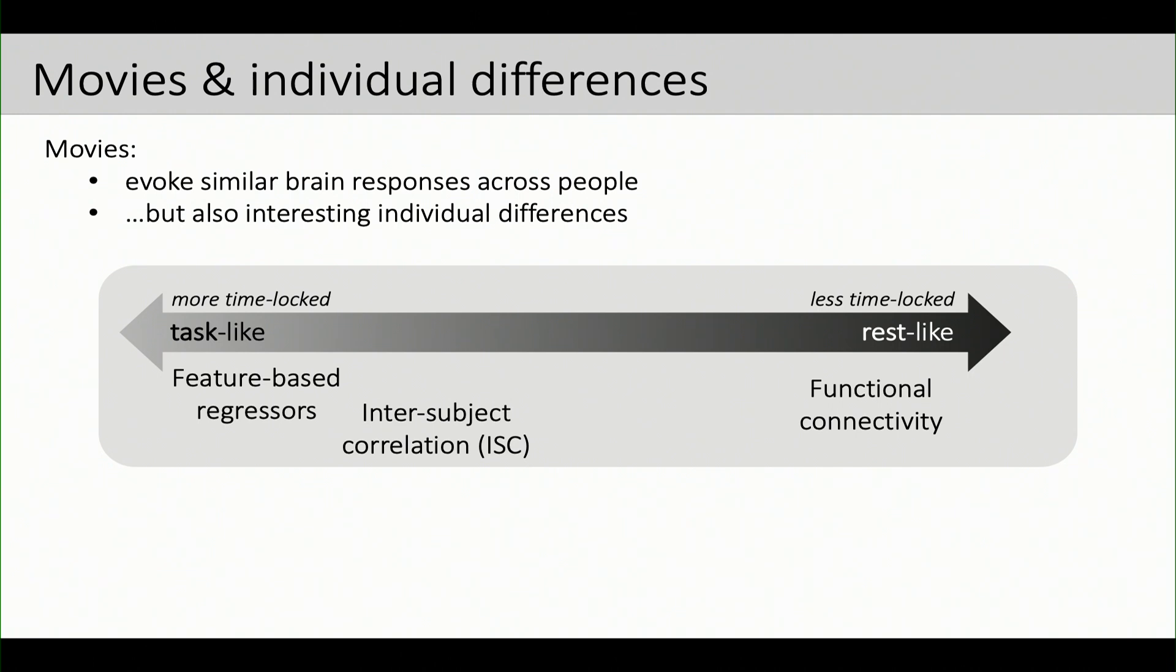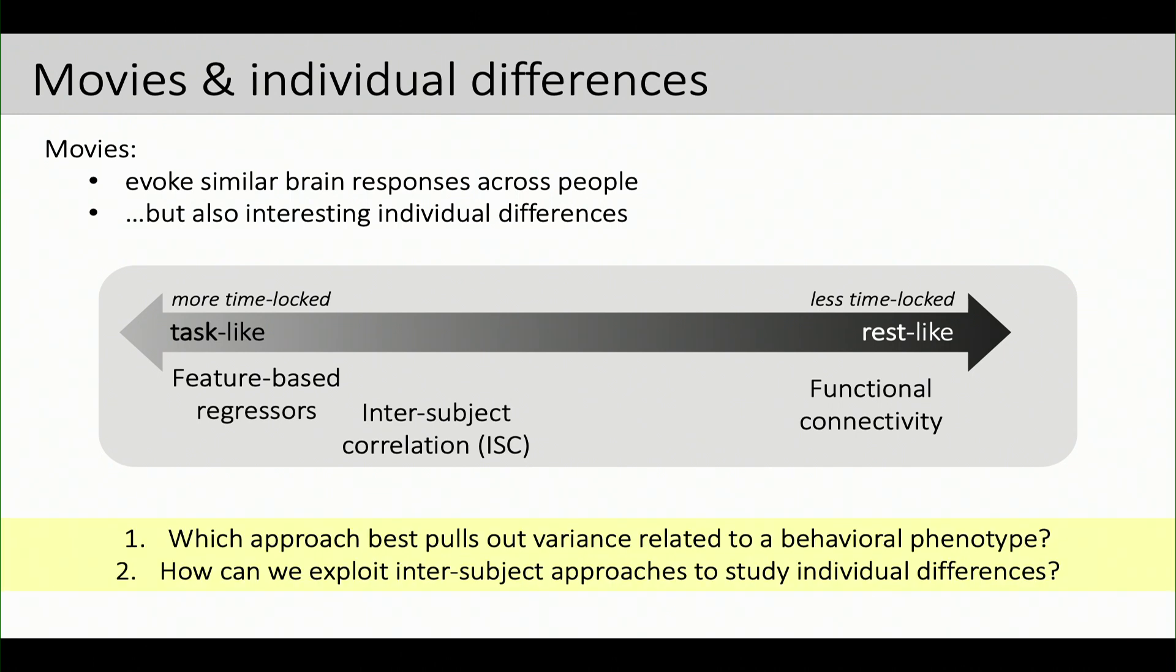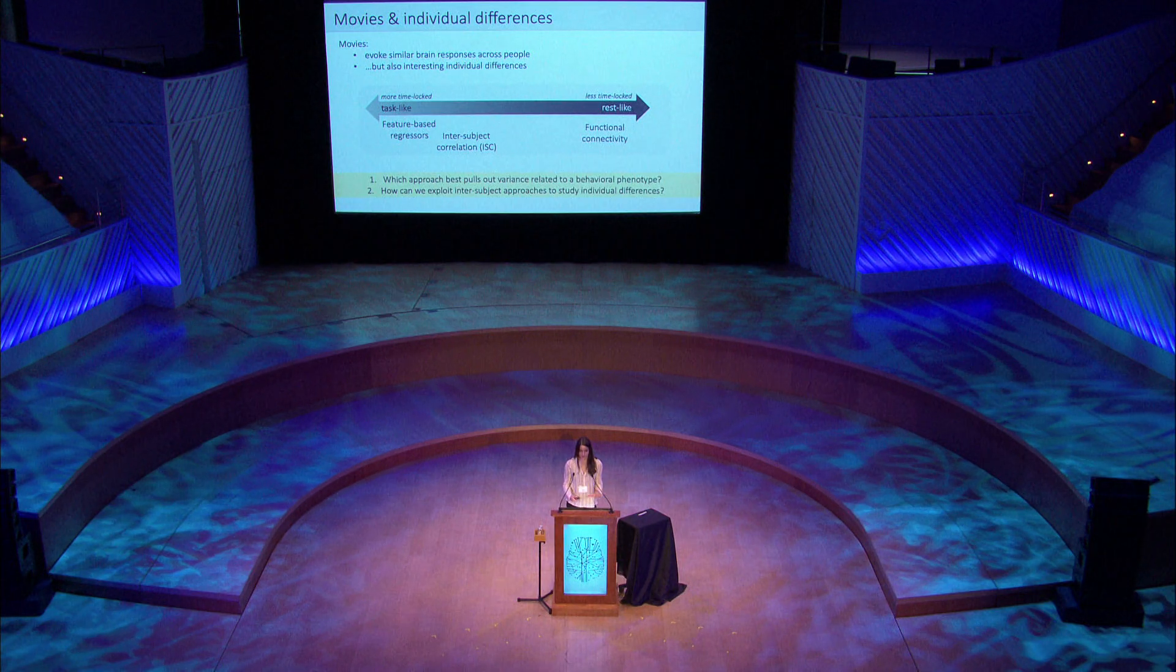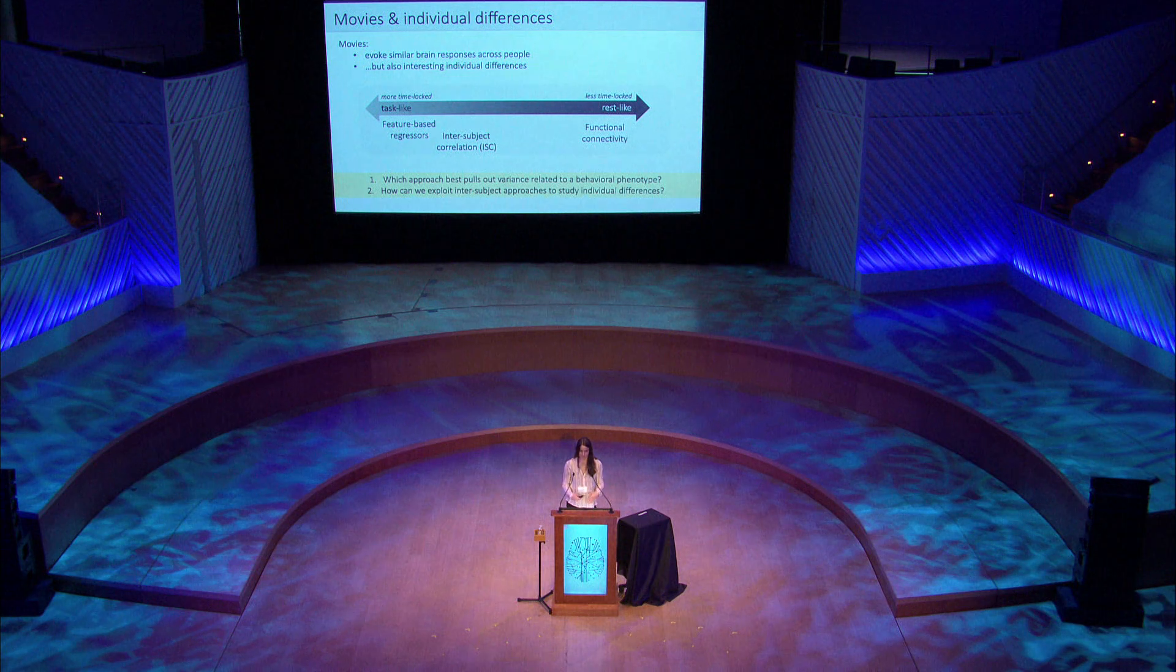And so some of the questions that I've been interested in are, first of all, which of these approaches or where along this spectrum can we best pull out variance that's related to a behavioral phenotype? And just a little bit of a spoiler, I've gotten a lot of traction with intersubject correlation approaches, but this poses sort of an interesting tension when we try to bring it back to individual differences. So how can we exploit these approaches that fundamentally are picking up on shared variance across people to then come back and say something unique about a given individual?